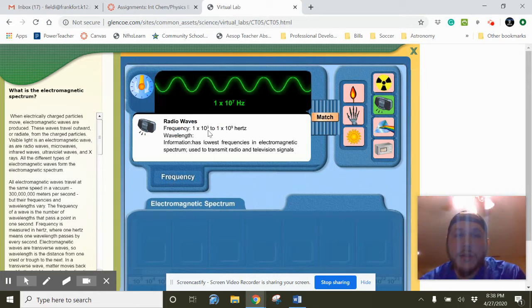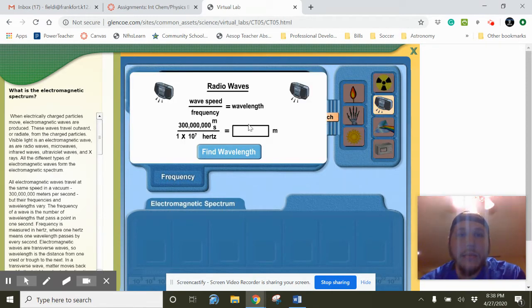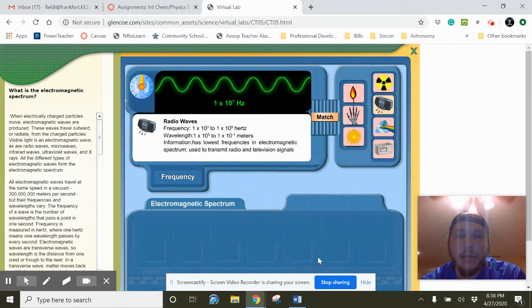So let's just go around and look, try and find one that matches up with that exponent. So I'm still clicking around. Have I found any yet? There we go. There's one. Radio waves, frequency one times 10 to the third all the way to one times 10 to the ninth Hertz. So if I hit match, awesome. Now I have it. And now we're just going to hit find wavelength. Cool. Makes it 30.